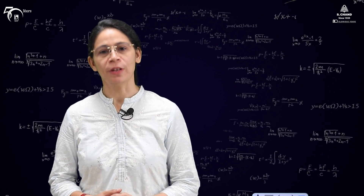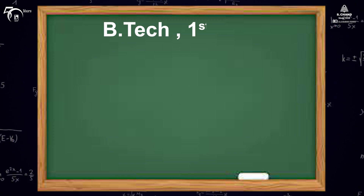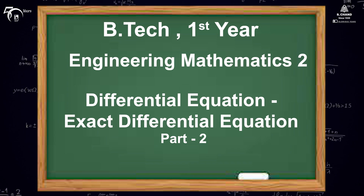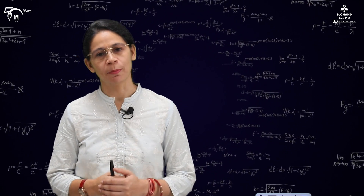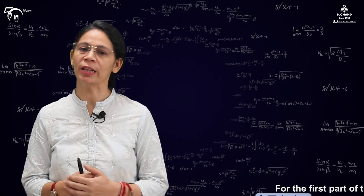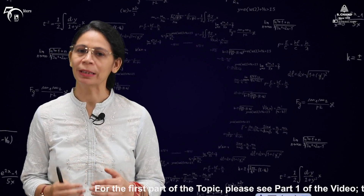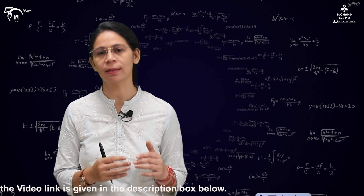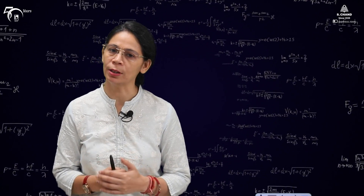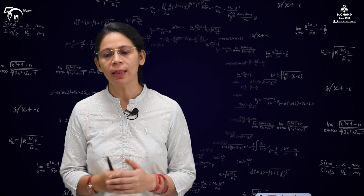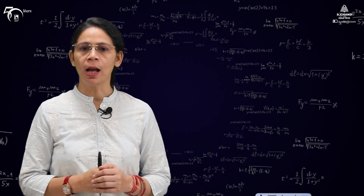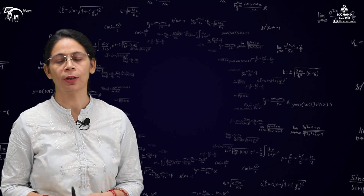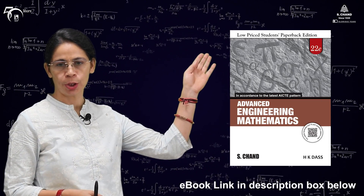Welcome back to the second part of the video. In the first part, we learned how to check whether a given differential equation is an exact differential equation or not, and if yes, what is the solution technique. We took one example and found the expression for f(x,y). For details, you can go through the book from S.C.A.N Publishing, the link for which is given in the description box.